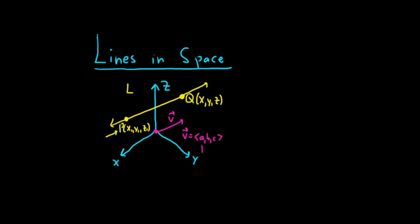By the way, these numbers here, the A, the B, and the C, they have names. They're called direction numbers.